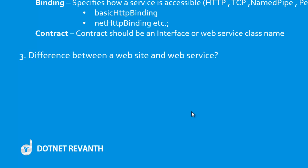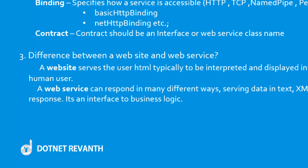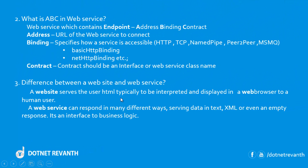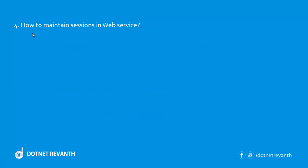Third question: difference between a website and a web service. A website serves the user HTML, typically to be interpreted and displayed in a web browser to a human user. With the intervention of a human, a website performs particular actions and renders the HTML page in the view. A web service can respond in many different ways, serving data in text, HTML, or even an empty response. It's an interface to business logic — it does not have any view, it only has an interface to get work done in the business logic.